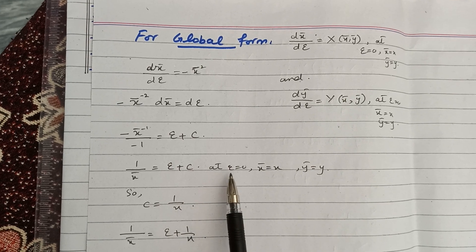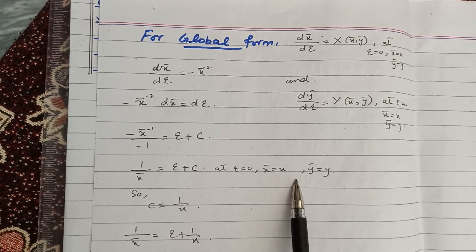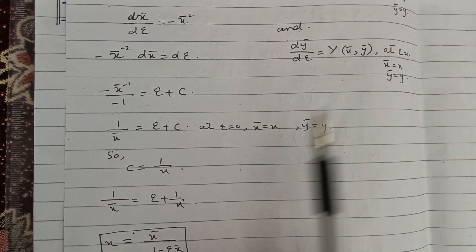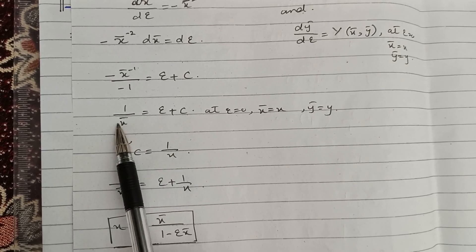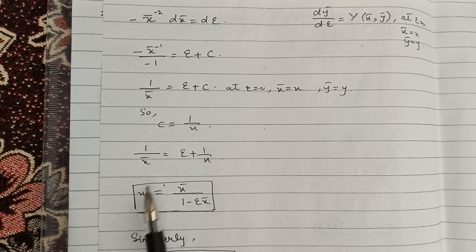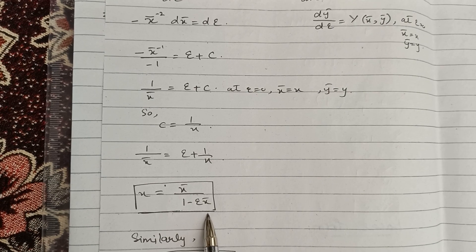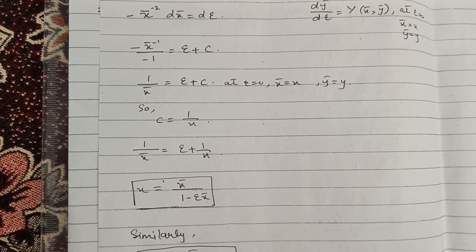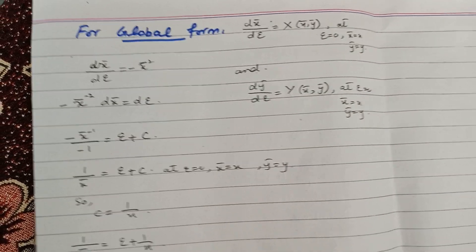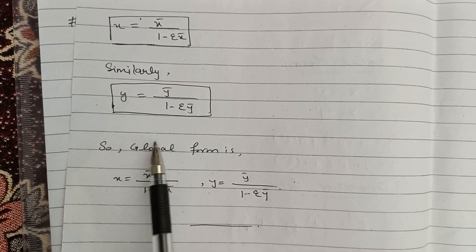Applying the initial condition — at ε=0, x̄=x — we get c = 1/x. Simplifying, x̄ = x / (1 − εx). Similarly, using the equation for Y(x̄, ȳ) and applying the initial condition, we obtain the corresponding expression for ȳ.